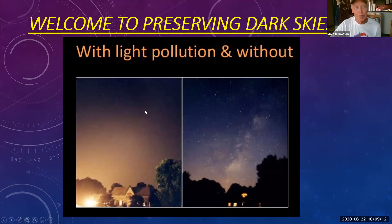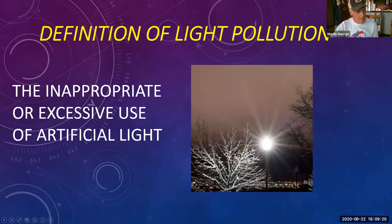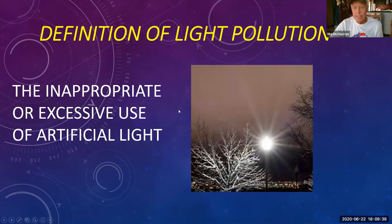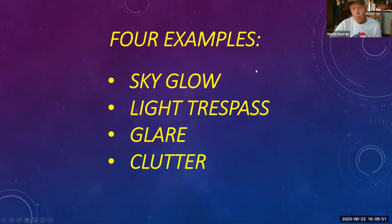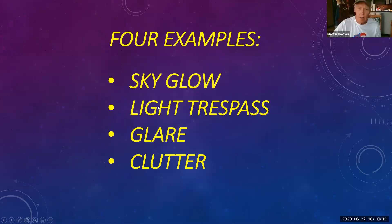We'll go ahead and get started. We need a definition of light pollution, provided by the International Dark Skies Association: the inappropriate or excessive use of artificial light. We have a picture here of a light fixture which is not shielded at all — it's lighting up the trees and the skies. We can look at four examples of types of light pollution: sky glow, light trespass, glare, and clutter.